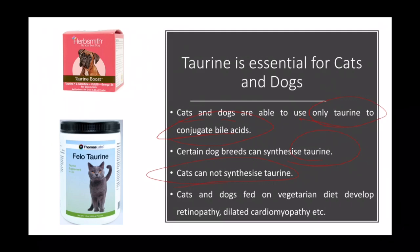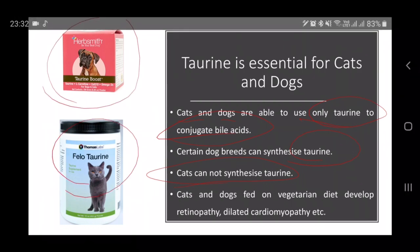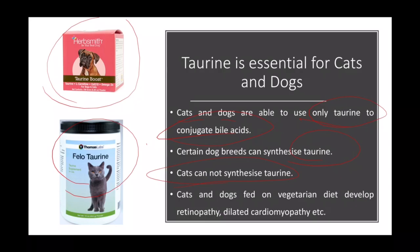A request to vegan and vegetarian friends: you can be vegan, but your cats and dogs cannot be vegan — you should supplement them with taurine and other nutrients. This is the basis of commercial taurine supplements available in the market. Happy learning!